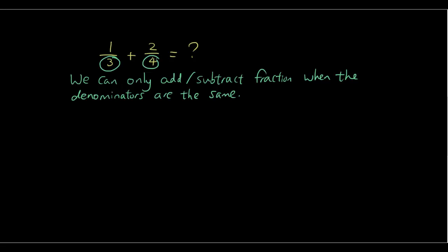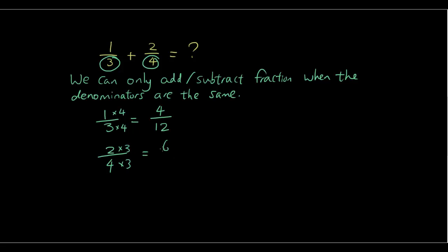In this case, 3 and 4 are not the same. But using our knowledge of equivalent fractions, we can convert one out of three to four out of twelve — we multiply both the numerator and the denominator by 4. And if we do something similar to the second fraction and multiply both the numerator and the denominator by 3, we get six out of twelve.